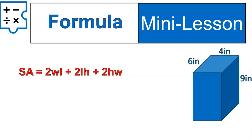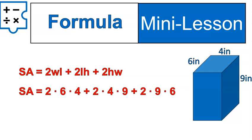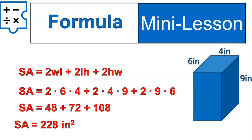Now I want you to try practicing. Here's the formula — try it out with a new figure. I want you to try substituting and solving. Pause and practice. All right, let's take a look. My width was 6, my length was 4, and my height is 9. Everywhere you see a W, I substituted 6; everywhere you see an L, I substituted 4; and everywhere you see an H, I substituted 9. Then I multiply the numbers first, and then add together: 48 plus 72 plus 108 gives us 228 square inches, because it is a surface area.